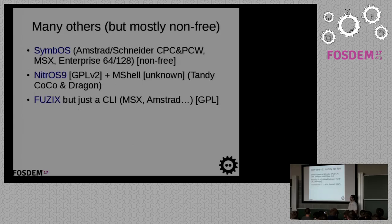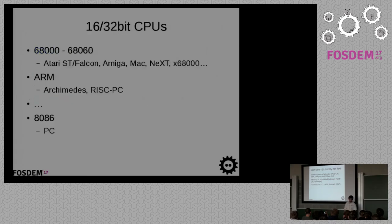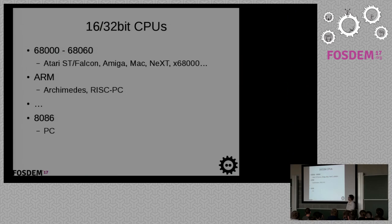There are many operating systems for those old machines. Some of them are free and open source software; others, well, the source code is there but no one really cares about the license. Now let's talk about newer CPUs, like 16/32-bit. There's of course the 68K with the whole family — Atari, Amiga, Mac, NeXT, and all those. ARM was born from Acorn.